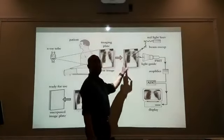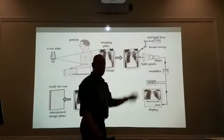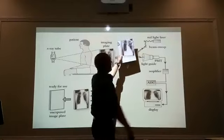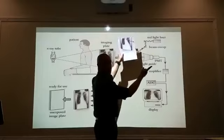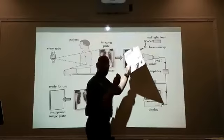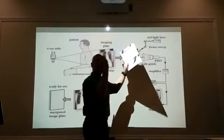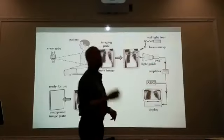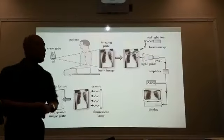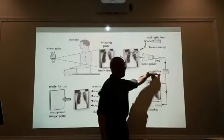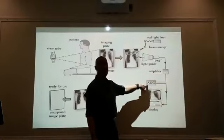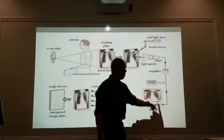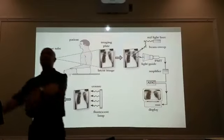You put your cassette in the image reader. The PSP is removed. Now it gets scanned by the red laser light. As it's being scanned, the crystals are going to emit a blue-violet light. That then goes into your photomultiplier tube, your PMT, to amplify the light signal. It then goes into an analog-to-digital converter, and simply, your image pops up on the screen.